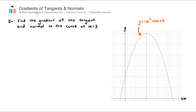In this video, we look at how to use differential calculus to find the gradients of tangents and normals. We're in topic 5, calculus, in the AI course. In topic 5, there are two main subtopics: differential calculus, which is what we're talking about here, and also integral calculus.